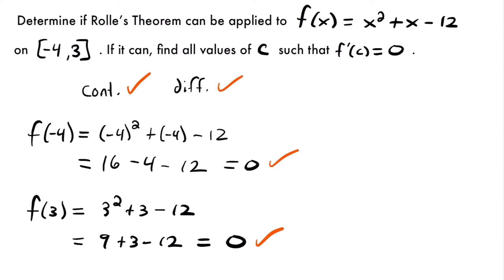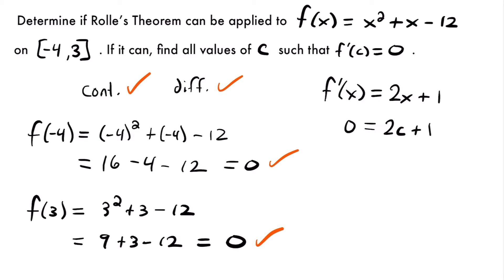Now we need to find all values of c such that the derivative at those points is 0. We take the derivative: f'(x) = 2x + 1. The derivative of x² is 2x, the derivative of x is 1, and the derivative of -12 is 0.